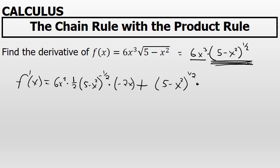Then we add the derivative of the first factor times the second factor unchanged. The first factor's derivative is much simpler: the derivative of 6x to the third is simply 18x squared.